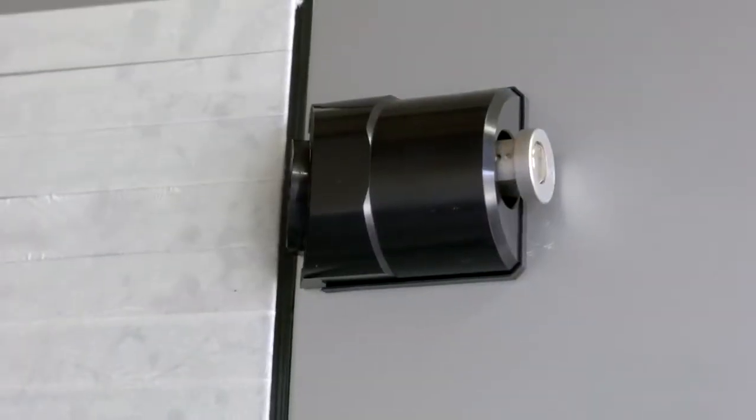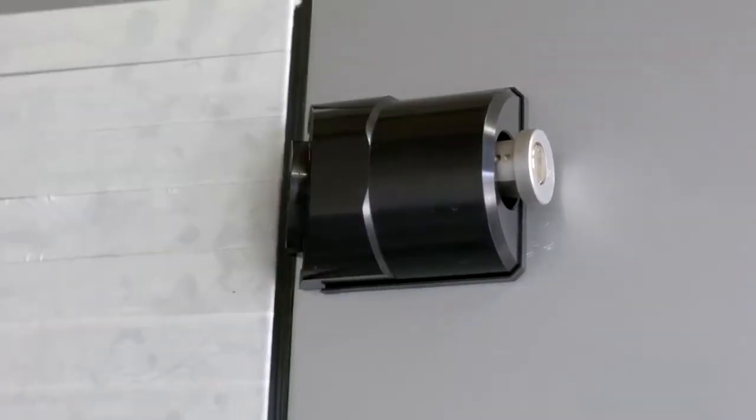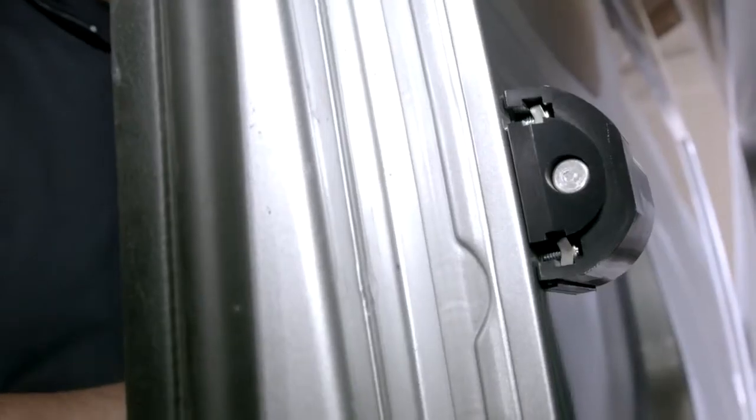We can now operate the side sliding door to ensure it moves freely without obstruction. At this time, we can make any adjustments required. Once confirmed, we can pinch tighten all the fixings with the hex key.